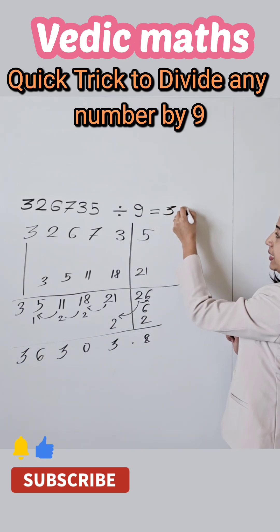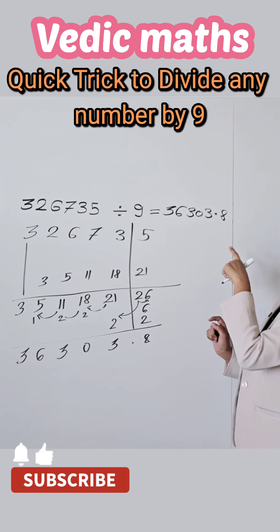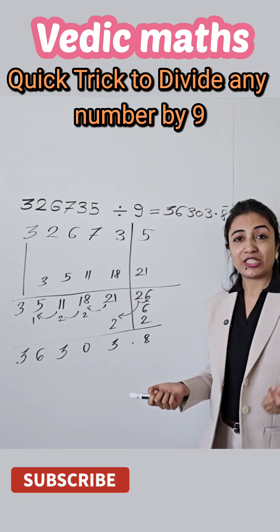So therefore 36,303.8. This 8 will be repeated, that's why we write here bar, that is a recurring number. This will be our final answer.